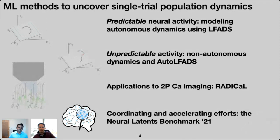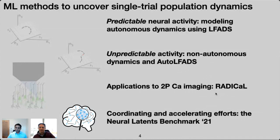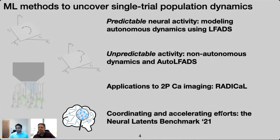There's clearly not enough time to go through all these stories in this short format. Auto-LFADS, RADICAL, and the Neural Latents Benchmark are all very recent. One of the wonderful properties of open science is that you can go read the bioRxiv preprint for auto-LFADS and RADICAL, and the arXiv preprint for Neural Latents that we're presenting at NeurIPS in a couple of days.